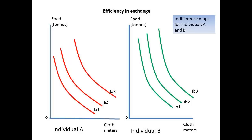Let us move on and consider the efficiency of exchange. We are going to consider efficient distribution. Remember, we are considering whether distribution is efficient, not whether it is equitable. For this, we look at the indifference maps. We show the indifference maps for the two individuals, and the indifference curves that relate to food and cloth.